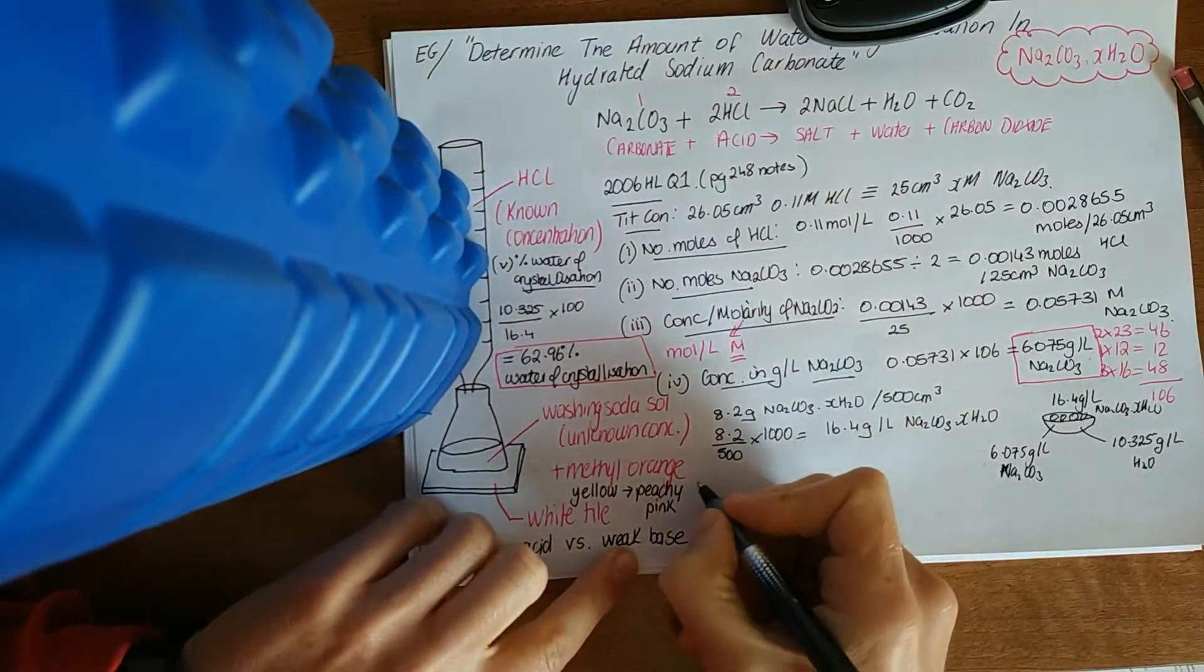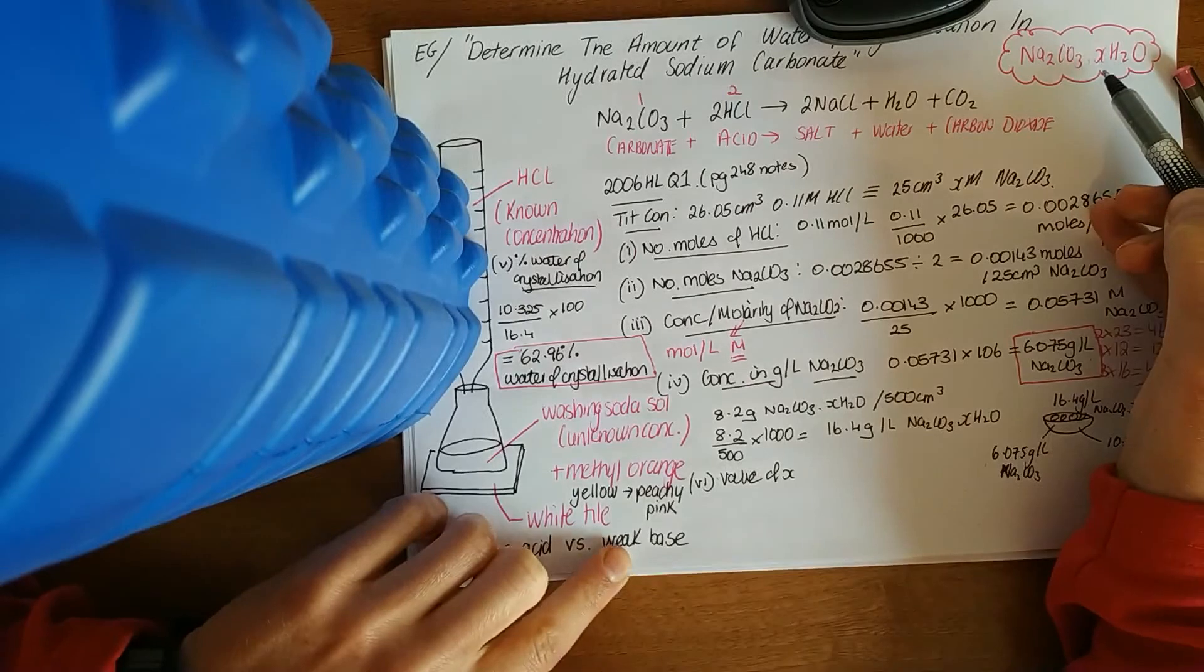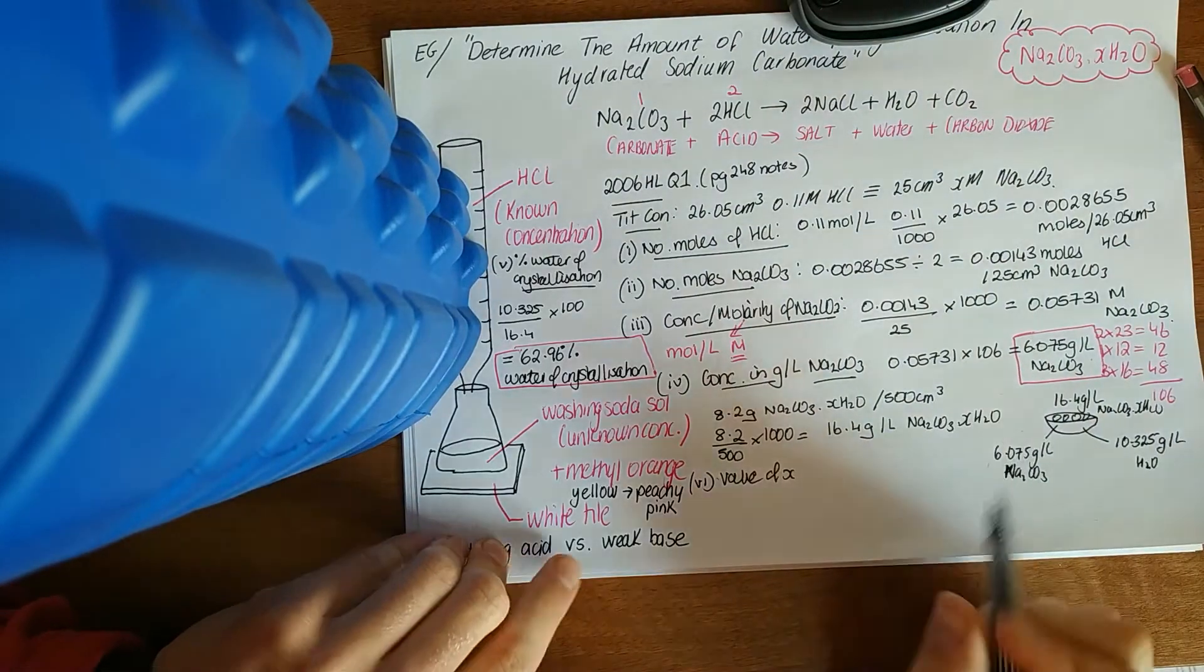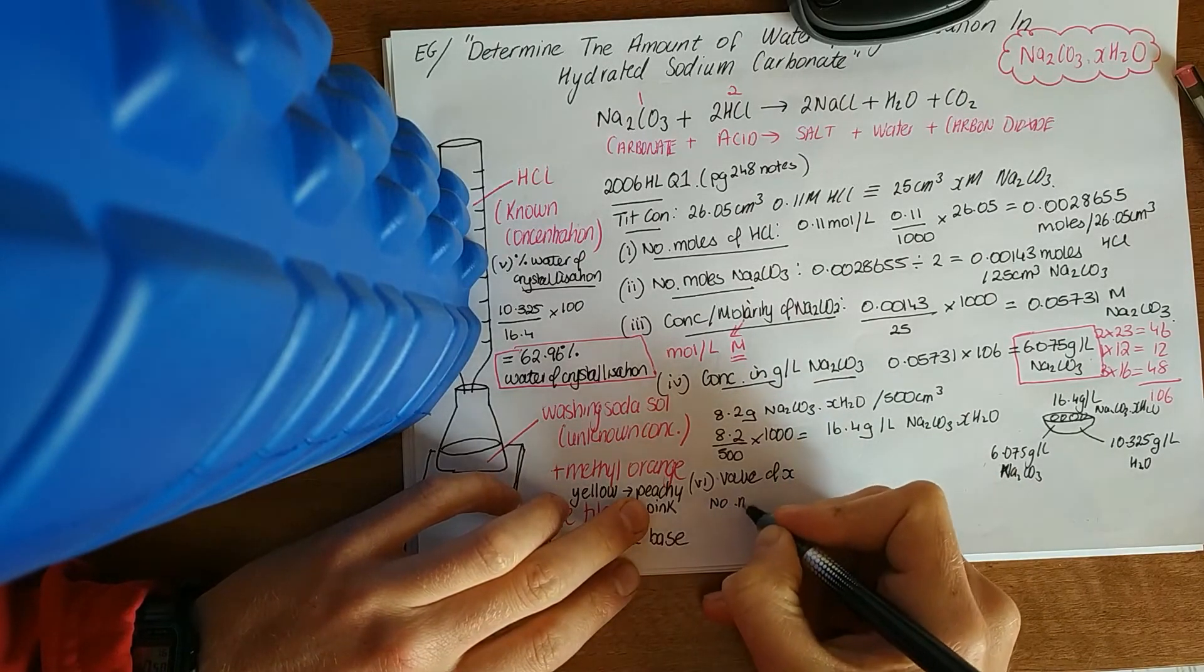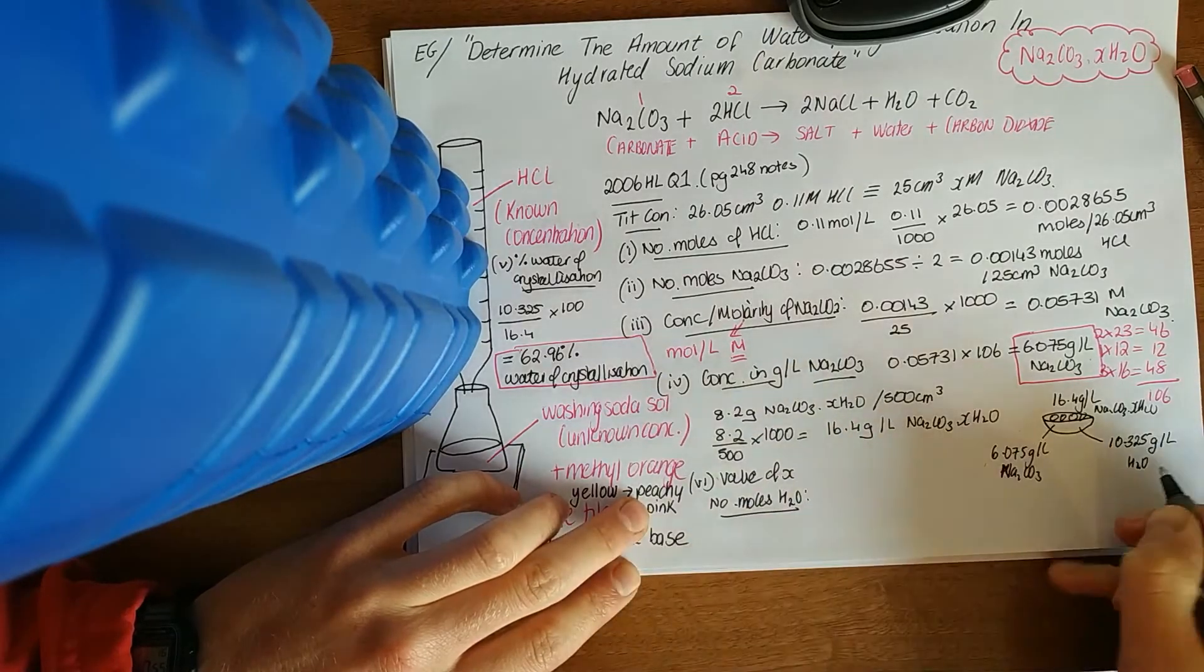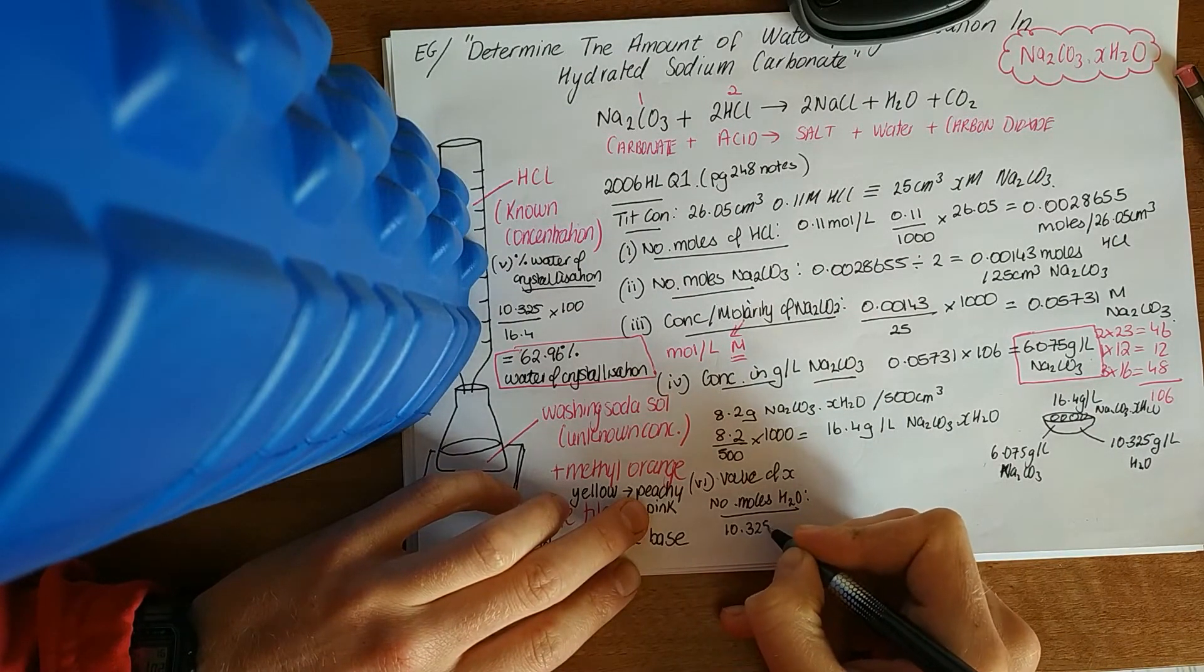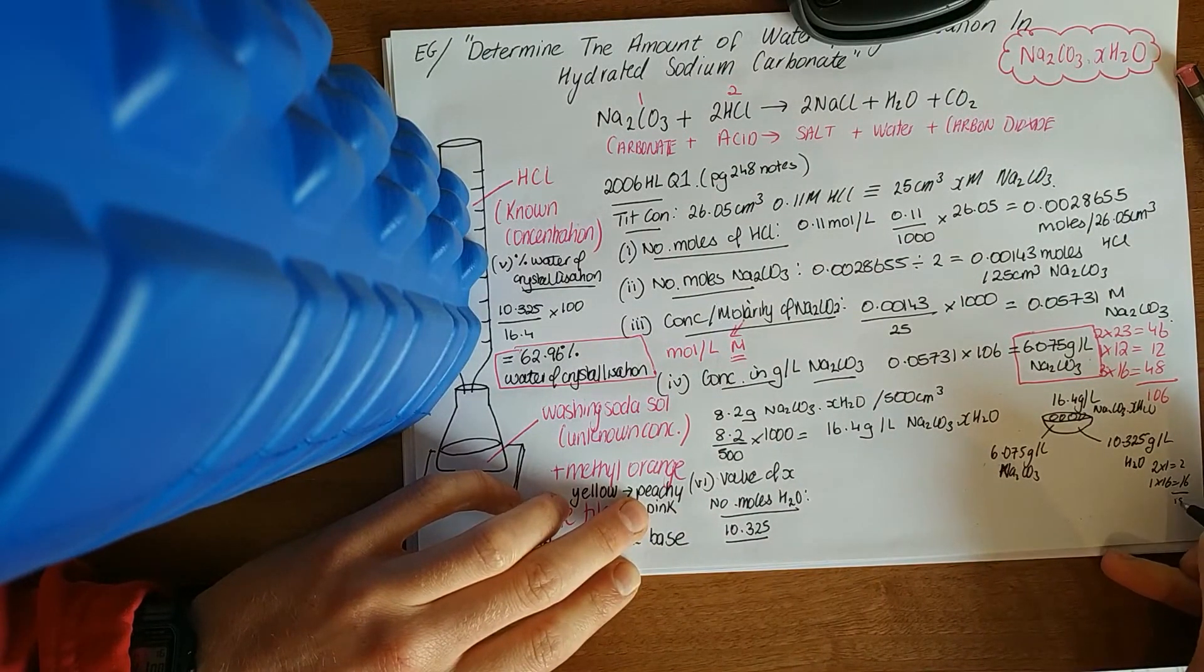And then the last one, calculate the value of X. That just means how many water crystals or water compounds are attached to this sodium carbonate crystal. What I do is go back to moles. Work out the number of moles of H2O. We've got the number of grams of it. To go back to moles you divide by the relative molecular mass. The relative molecular mass is 2 times 1 is 2, 1 by 16 is 16, add that up to 18.